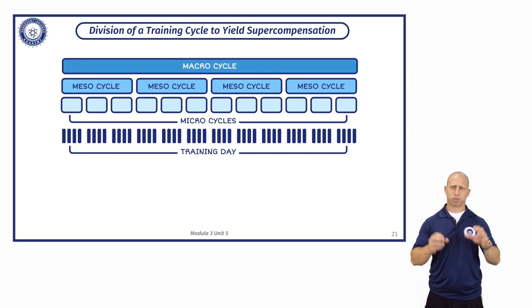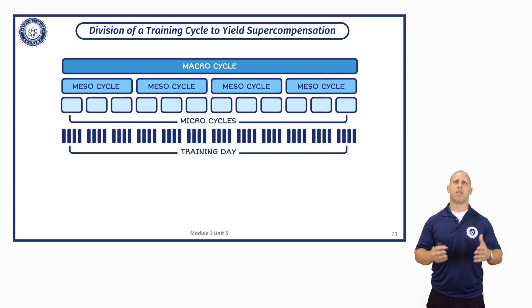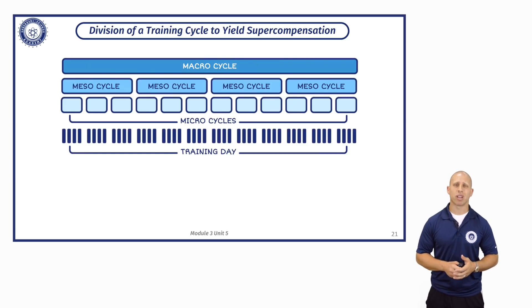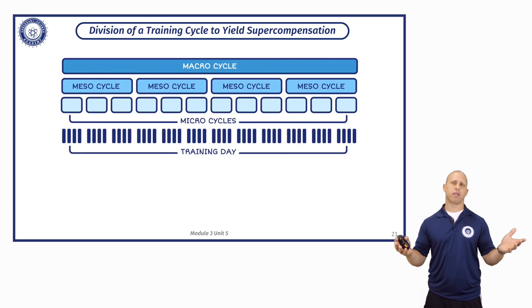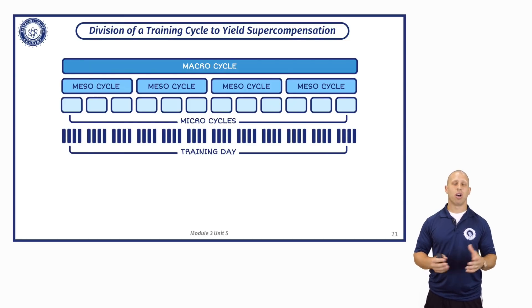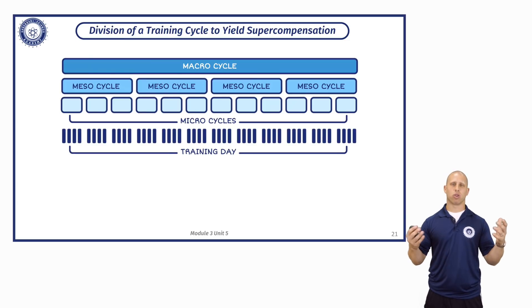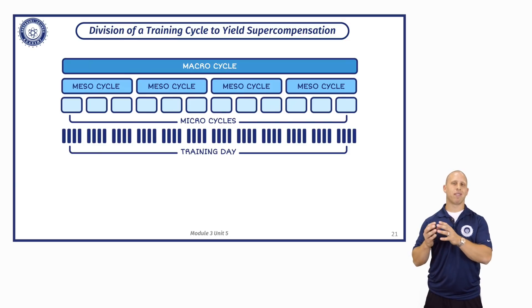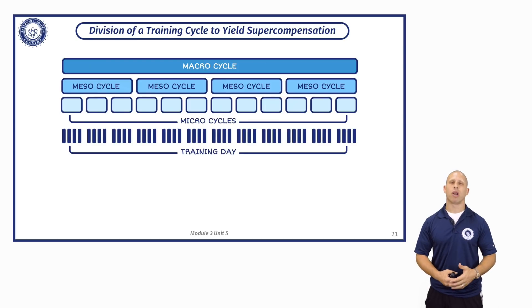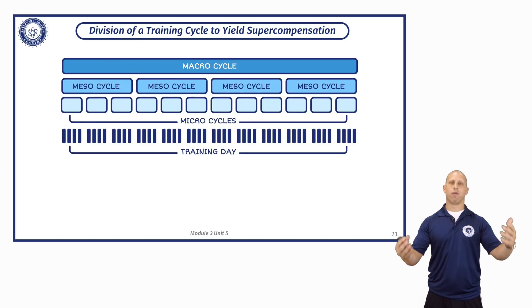You can see on the top here the term macro cycle and the solid blue bar that encompasses all of these mesocycles. A macro cycle is typically a year of training — if you have 12 months and sketch everything out to peak for a competition. For powerlifting, if you have a competition six months from now, you can make your macro cycle six months. The macro cycle term was typically used for Olympic athletes who might have had a macro cycle up to four years. We can manipulate our macro cycle to fit our time frame to peak for our competition.